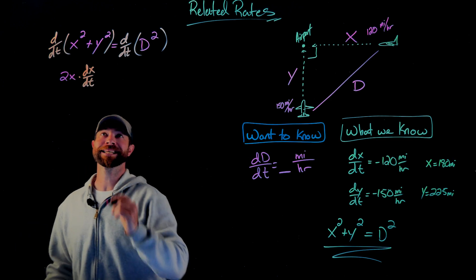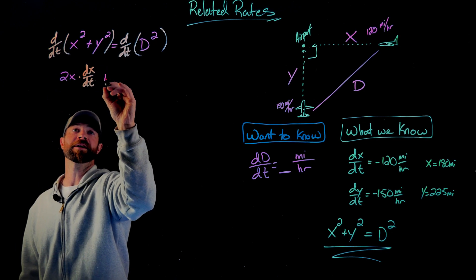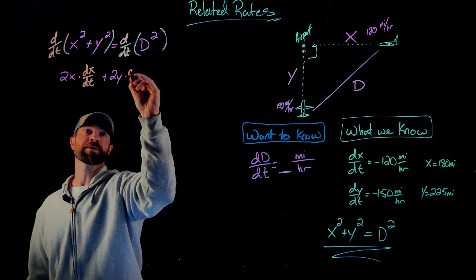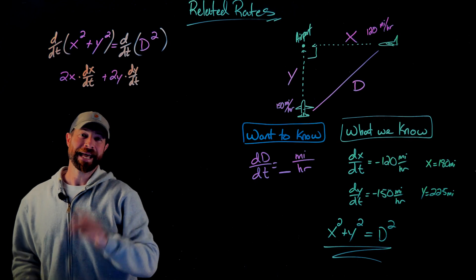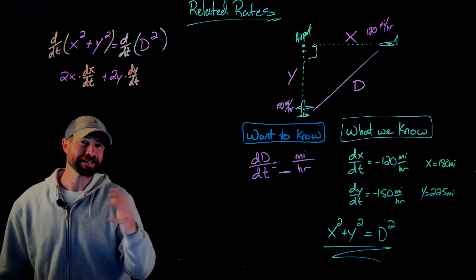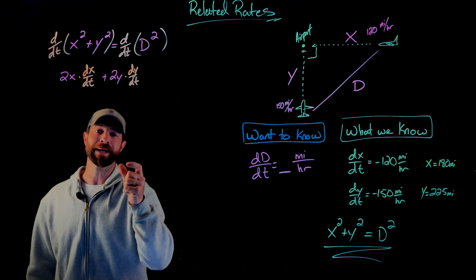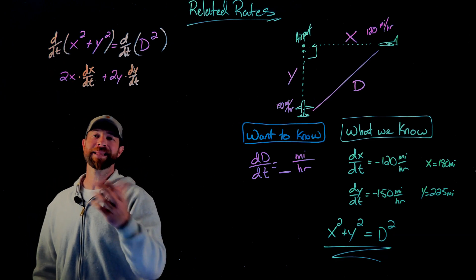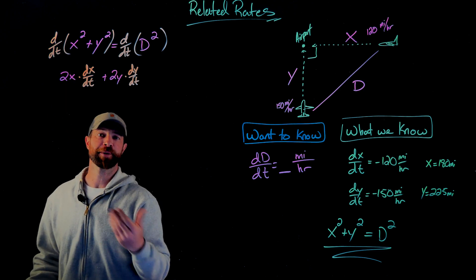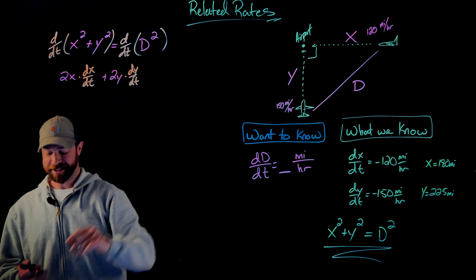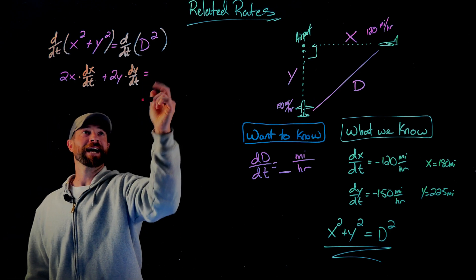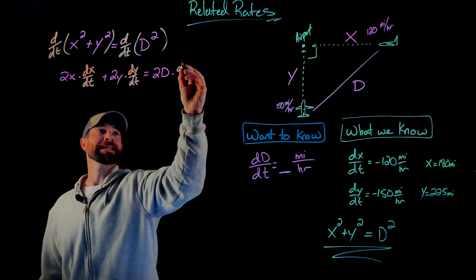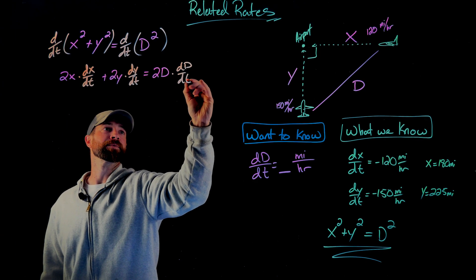The exact same thing happens with the next term. Using the power rule I get 2y, and the chain rule gives me dy/dt afterwards. These terms appear because I'm differentiating with respect to time. On the other side of the equation I do exactly the same thing — applying the power rule and then multiplying by dd/dt using the chain rule.